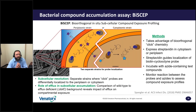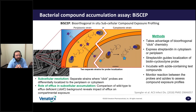We had a fantastic postdoctoral fellow at Novartis named Ben Spangler, who developed an assay called BICEP, developed to provide subcellular resolution of compound accumulation. The methodology takes advantage of bioorthogonal click chemistry. We expressed streptavidin in the cytoplasm or in the periplasm in two different strains. Streptavidin then guides the localization of a biotin cyclooctine probe. We can then incubate the cells with an azide-containing test compound, which, if it gets into either of the compartments where streptavidin and the biotin probe are expressed, will react in a click reaction.